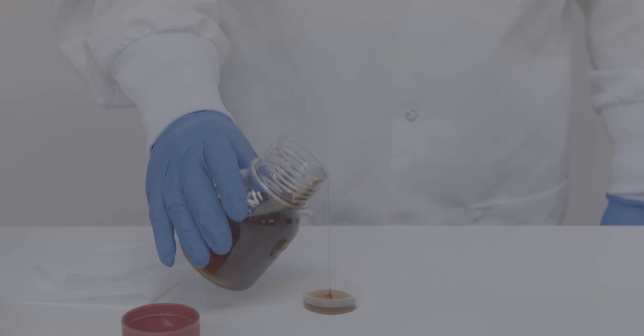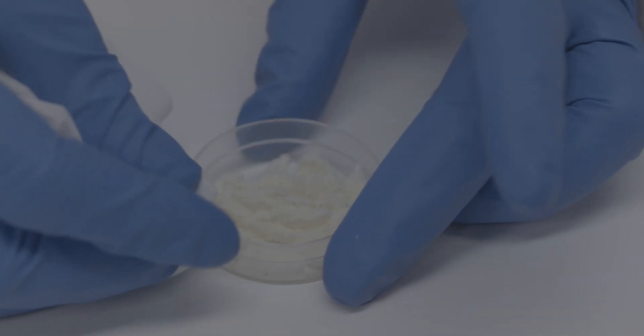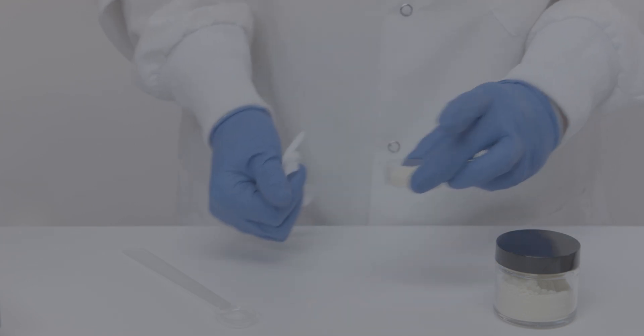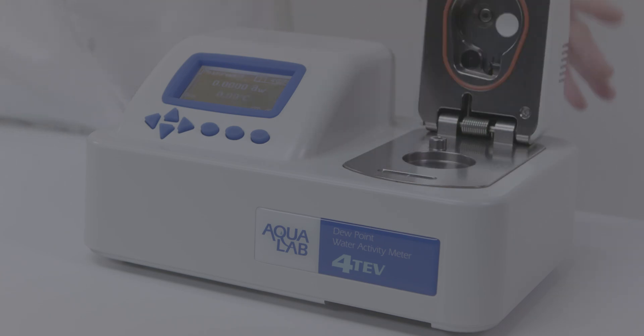Fill your sample cup no more than half full. Wipe the bottom, the edges, and the rim of your sample cup with a kimwipe before putting it in the instrument, so you don't contaminate the sample chamber. Even small amounts of water or contamination can significantly affect the reading.